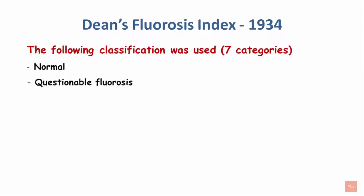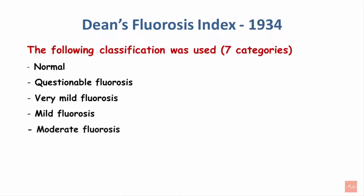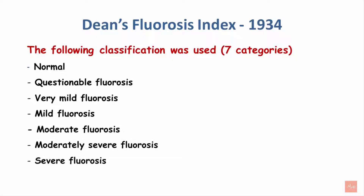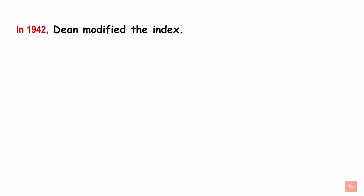The 1934 classification categories were: normal, questionable fluorosis, very mild fluorosis, mild fluorosis, moderate fluorosis, moderately severe fluorosis, and lastly severe fluorosis.